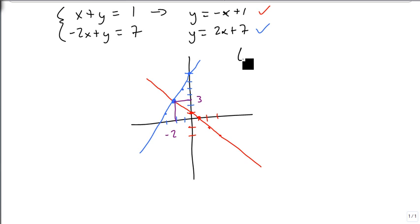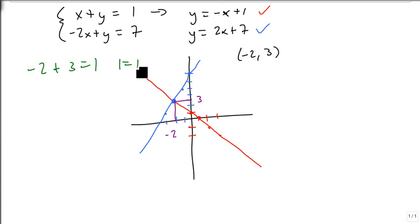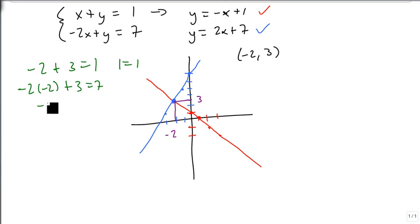We can check our answers. Minus 2 plus 3 equals 1 — sure enough, 1 equals 1, so it works for the first equation. Then minus 2 times minus 2 plus 3 equals 7, which is 4 plus 3 equals 7, and since 7 equals 7, it works for the second equation as well.